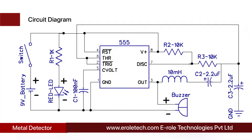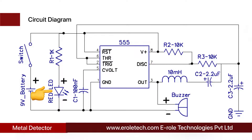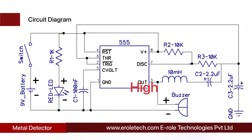Before making the project we will understand its circuit diagram. There is a 9 volt battery to power up the circuit, an on/off switch to start or stop the project, a power supply indication LED, and a current limiting resistor to protect the LED from high current and voltage. The 555 timer IC can work in three different modes: monostable, astable, and bistable. In this project we are using it in astable mode, so it will continuously give high and low signals at its output pin.